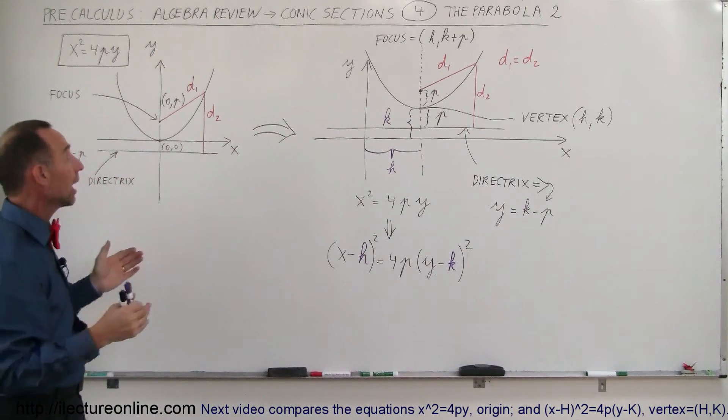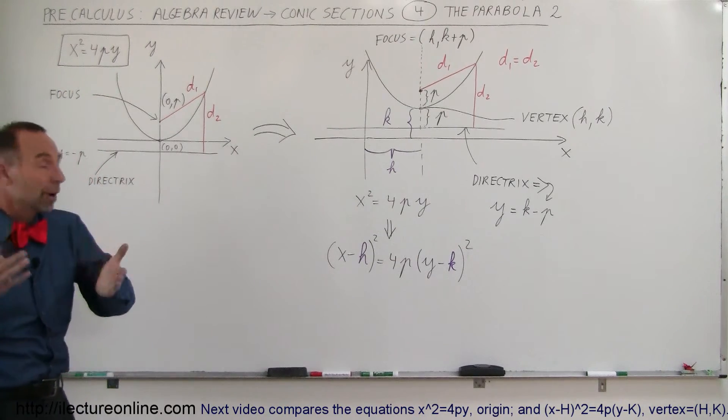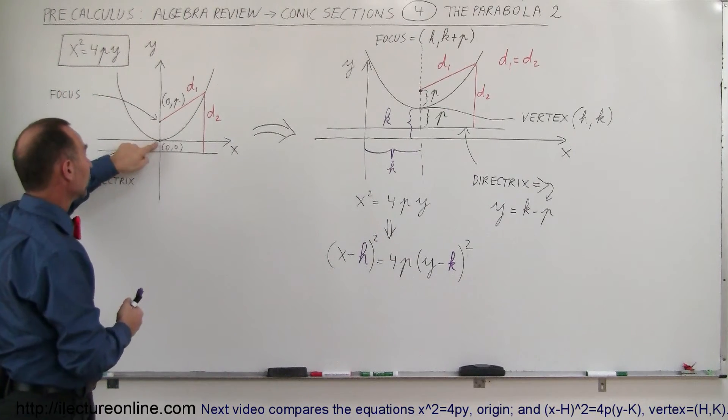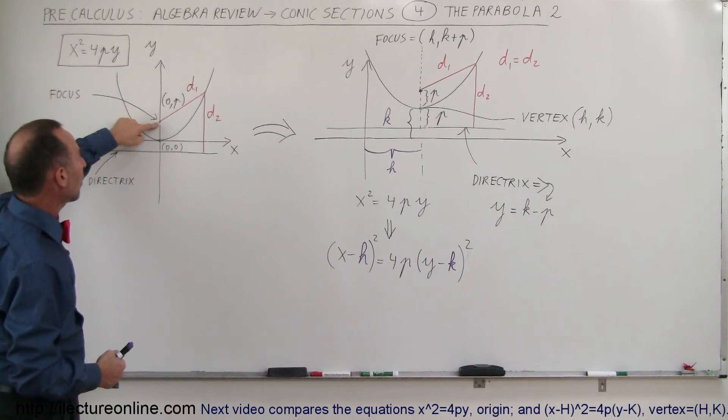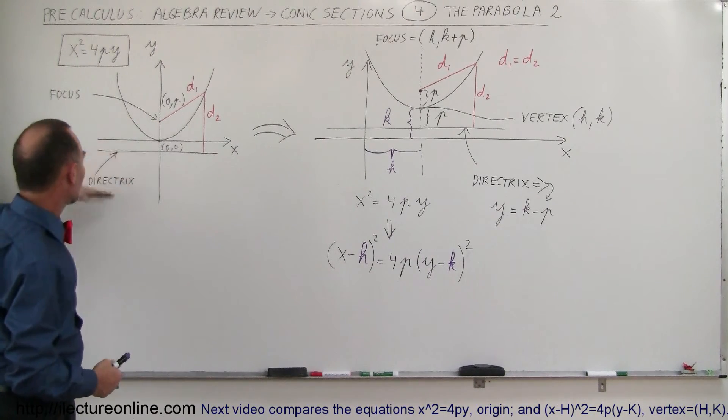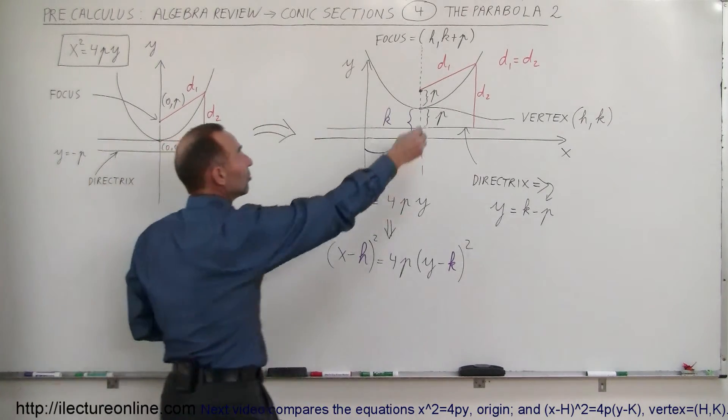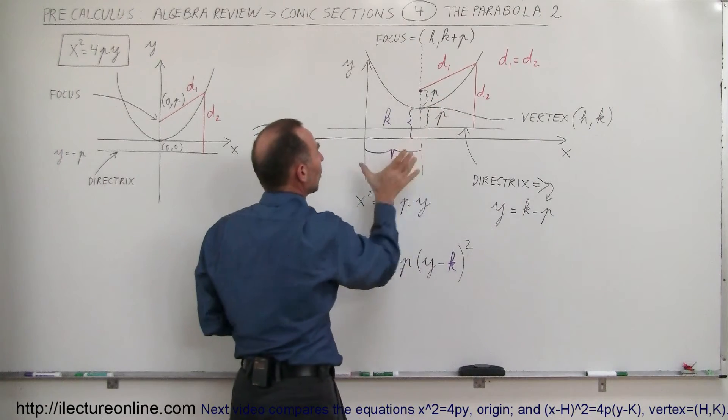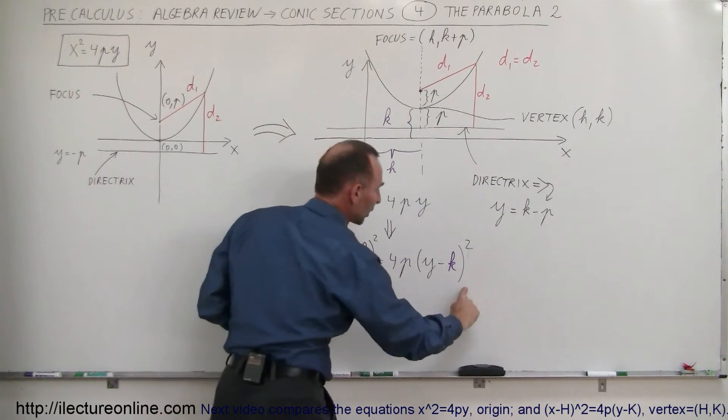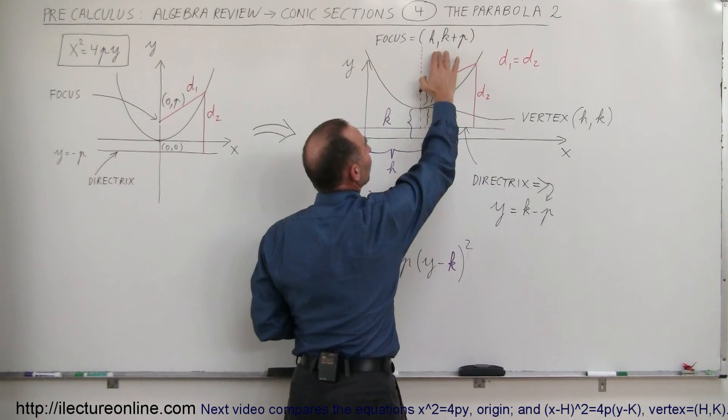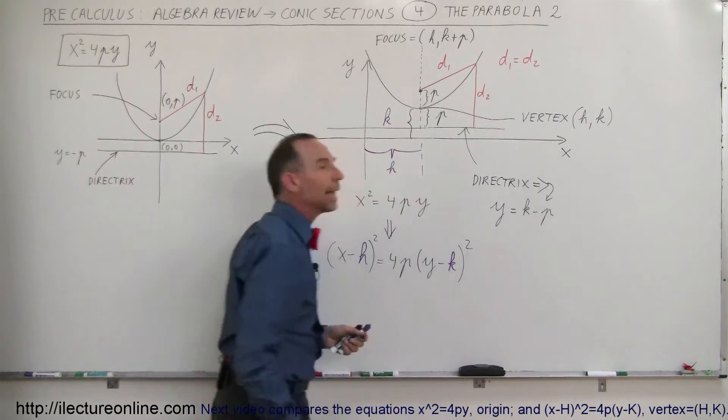So in general now, if we have the equation x squared equals 4p times y, that is the equation for a parabola with the vertex at the origin, and that means that the focus is at the point (0,p) and the directrix is at y equals minus p. But if we then move the parabola to any location anywhere in the xy-plane, we move it a distance h, we move a distance k, then the new equation becomes this, then the position of the focus will be that, and the equation for the directrix will be that.